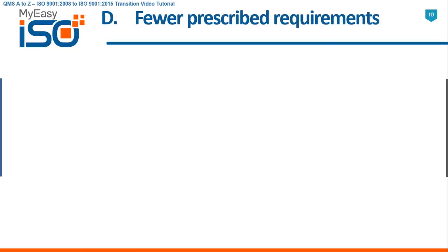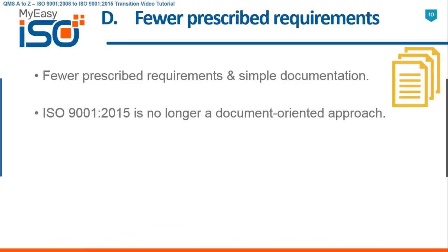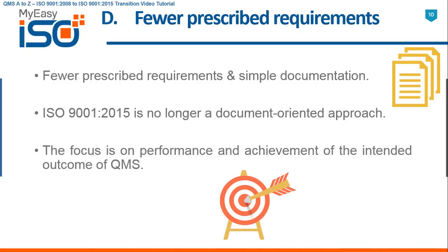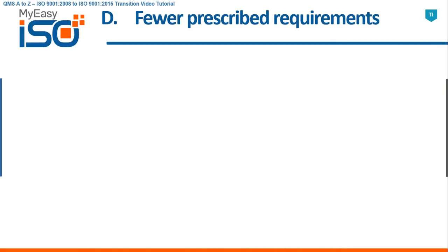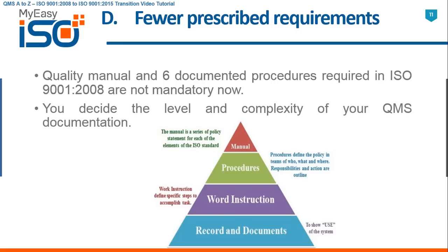D. Fewer prescribed requirements and simpler documentation. ISO 9001 2015 is no longer a document-oriented approach. The focus is on performance and achievement of the intended outcome of the QMS. The quality manual and six documented procedures required in ISO 9001 2008 are not mandatory now. You decide the level and complexity of your QMS documentation.